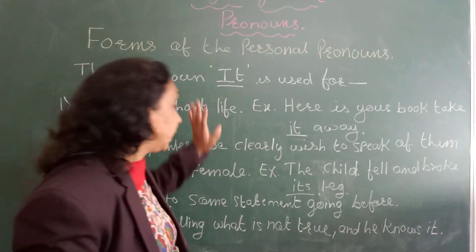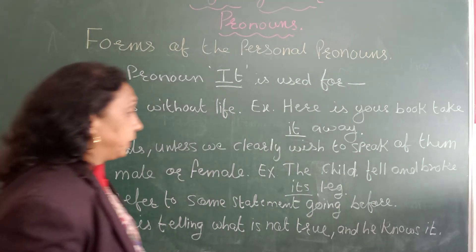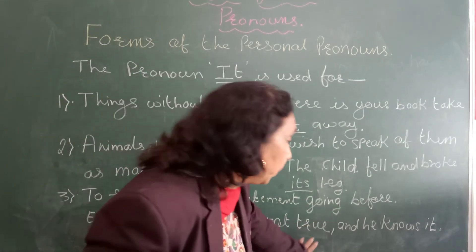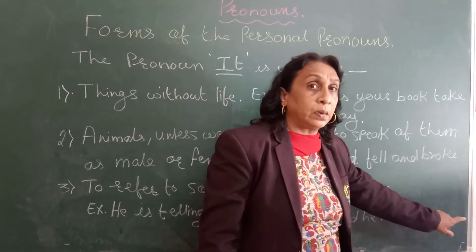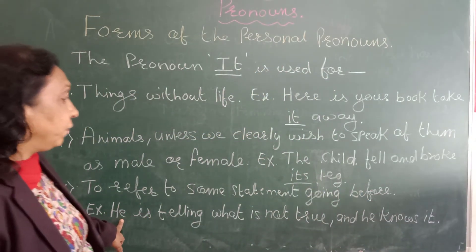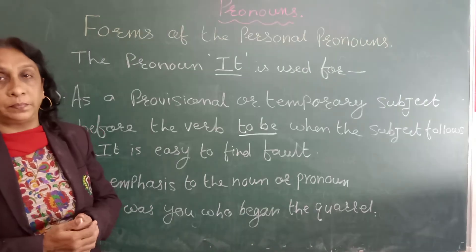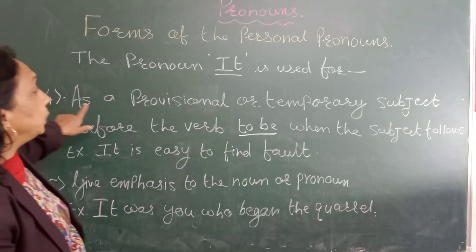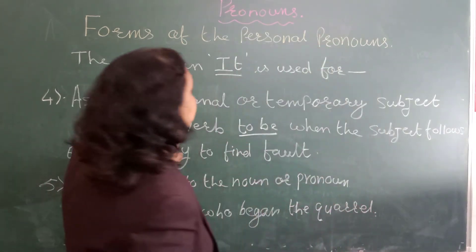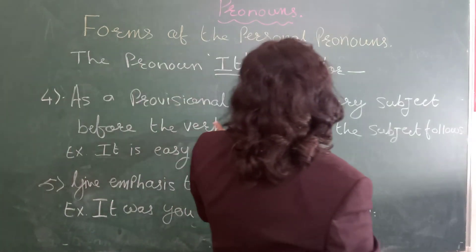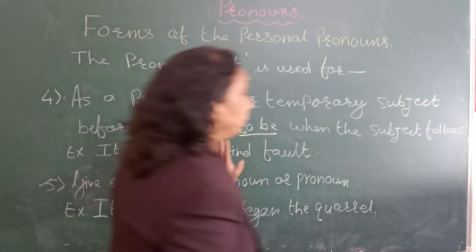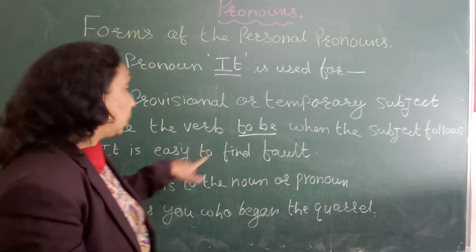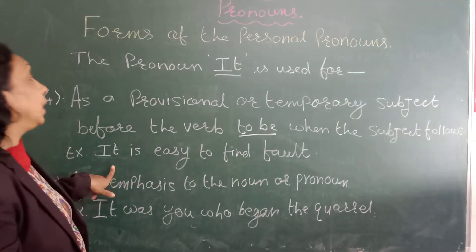The third use — 'it' is used to refer to some statement going before it. For example: 'He is telling what is not true, and he knows it.' Here 'it' refers to some previous statement. The fourth use — 'it' is used as a provisional or temporary subject before the verb 'to be', when the subject follows. For example: 'It is easy to find fault.' Here 'it' is followed by the subject.